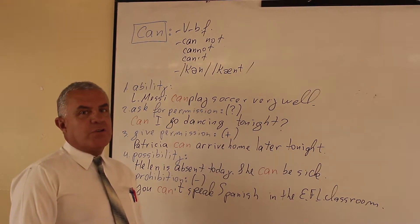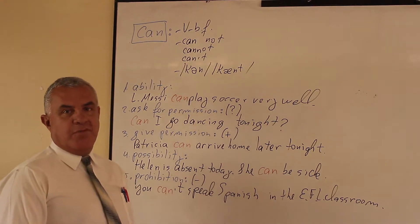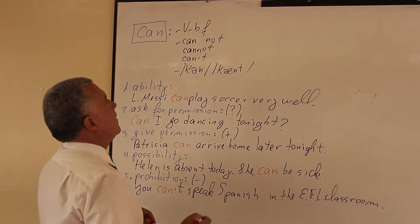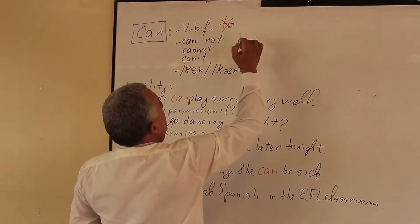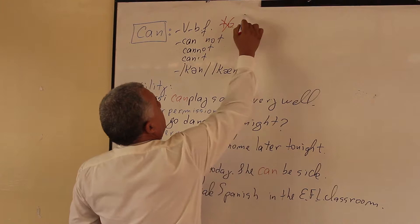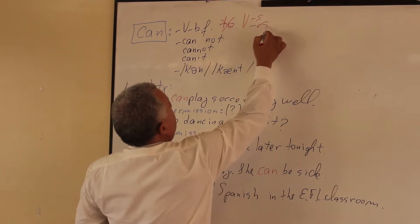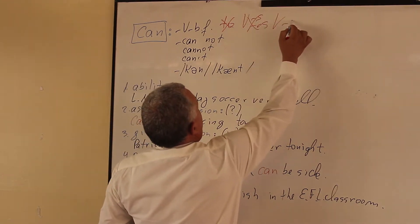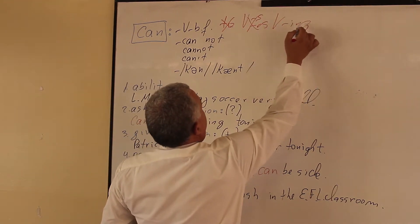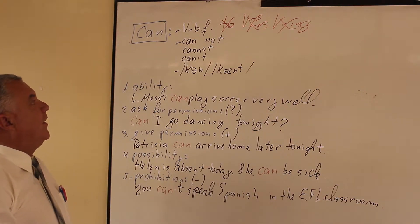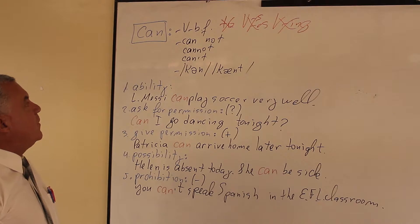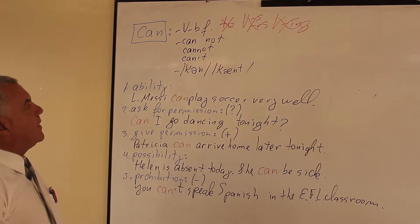CAN is used with the verb in base form. It means you don't have to use TO. With HE, SHE and IT, you don't have to add S or ES. And you don't have to add ING. Just the base form of the verb. In negative, you can use CANNOT, CANNOT or CAN'T.